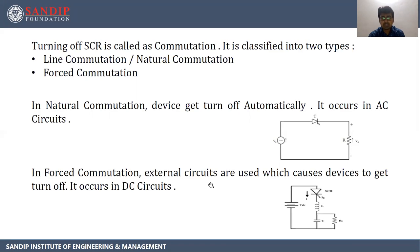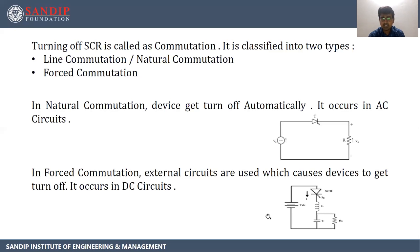Next is forced commutation. In forced commutation, external circuits are being used which cause the device to get turned off. It occurs in DC circuits. Here we have connected the DC supply across the SCR. So to turn it off, we need some external circuit. The SCR is not getting turned off automatically, but we are forcing it to get turned off. This type of commutation technique is called forced commutation.